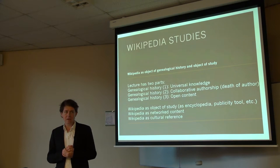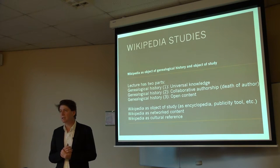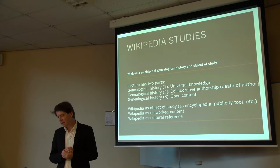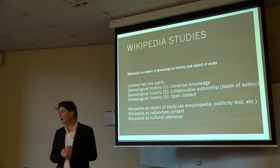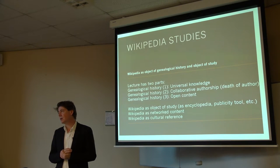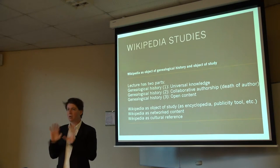The first one is, in some sense, the most fundamental, and that is the quest for universal knowledge — the quest for the collection of universal knowledge, putting it all in one place. The second genealogical history one could make of Wikipedia is as a form of collaborative authorship, or as a form of anonymous collaborative authorship, or at least a work without a named author.